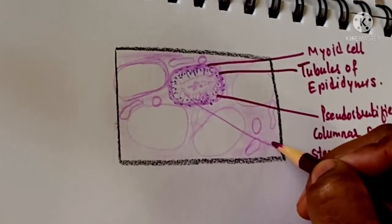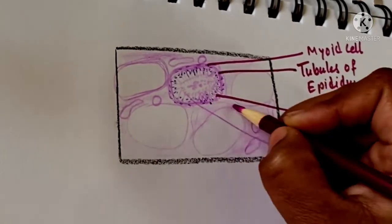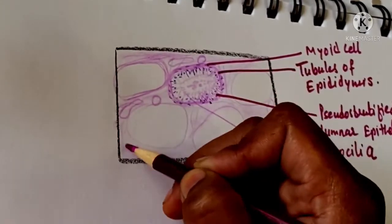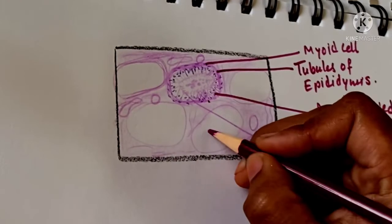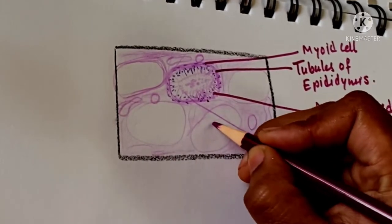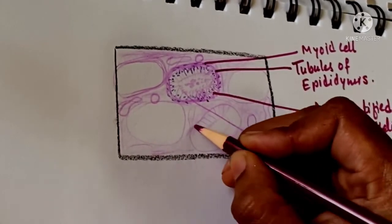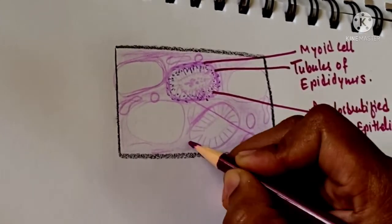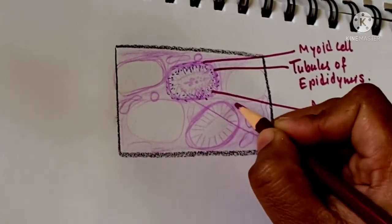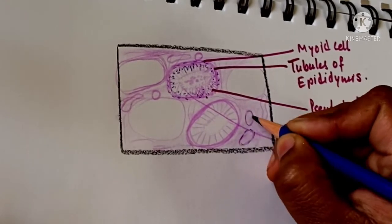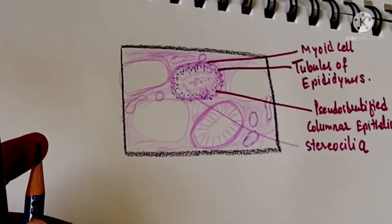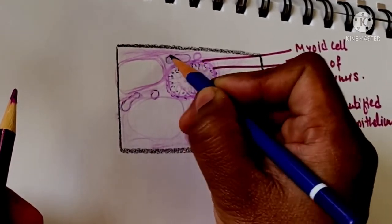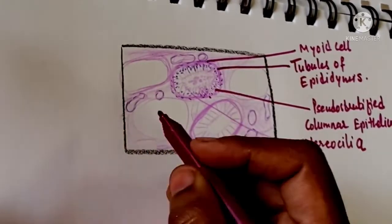Functions of epididymis: absorption of excess fluid secreted by testis, secretion of nutritive substances, and phagocytosis of residual bodies and defective sperms. Smooth muscle in the wall contracts rhythmically during ejaculation to move the sperm.